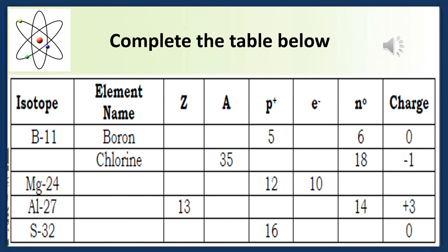Complete the table of subatomic particles. Row 1: B-11, Boron, atomic number 5, mass number 11, protons 5, electrons 5, neutrons 6, charge 0. Row 2: Cl-35, Chlorine, atomic number 17, mass number 35, protons 17, electrons 18, neutrons 18, charge negative 1. Row 3: Mg-24, Magnesium, atomic number 12, mass number 24, protons 12, electrons 10, neutrons 12, charge positive 2. Row 4: Al-27, Aluminum, atomic number 13, mass number 27, protons 13, electrons 10, neutrons 14, charge positive 3. Row 5: S-32, Sulphur, atomic number 16, mass number 32, protons 16, electrons 16, neutrons 16, charge 0.